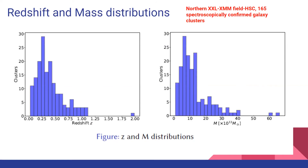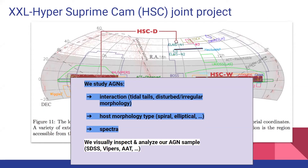I present two distributions: the redshift distribution and the mass distribution from our sample, which consists of 165 spectroscopically confirmed galaxy clusters from the northern XXL field. With this joint project using XXL and HSC, we want to study AGN interactions, looking for tidal tails or disturbed morphology. We also want to study the host morphology type — whether they are spiral, ring morphology, etc. — and the spectra, visually inspecting and analyzing our sample mainly with SDSS, but also with VIPERS or AAT.